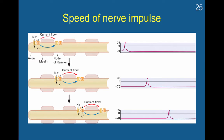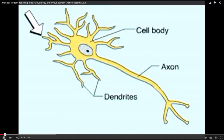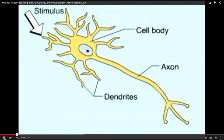Now a brief video will show how an action potential begins and flows down the length of an axon. We have looked at the resting potential in a neuron that is not transmitting nerve signals. What happens when the cell is stimulated? A stimulus changes the permeability of the cell membrane to sodium and potassium ions, altering the distribution of charge in the cell body. If the change is great enough, it triggers a signal called an action potential that moves down the axon.